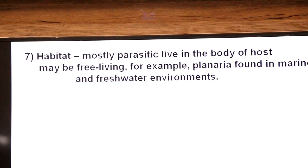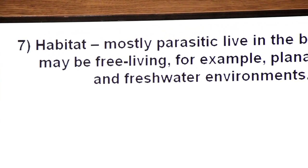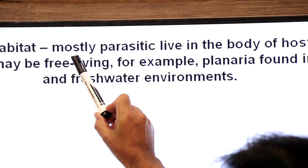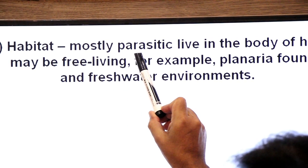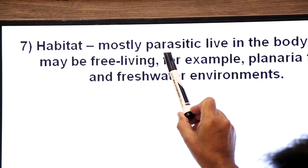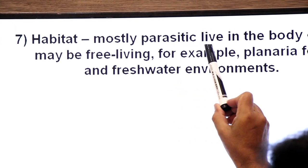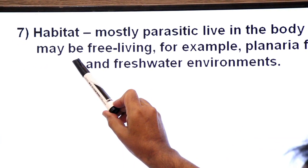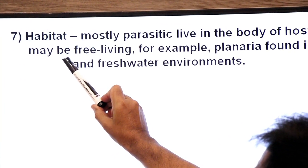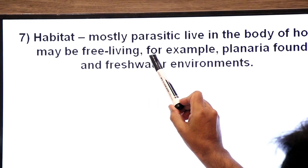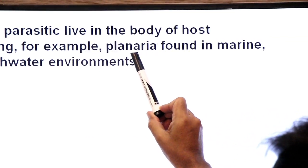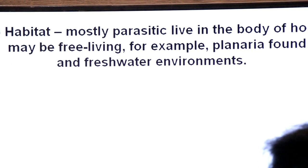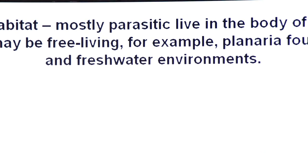Now habitat — place of living. Mostly the members of phylum Platyhelminthes are parasitic, and they are found in the body of their host. Some are free-living; for example, Planaria is free-living, found in both marine water as well as freshwater environments.